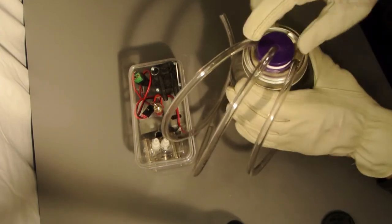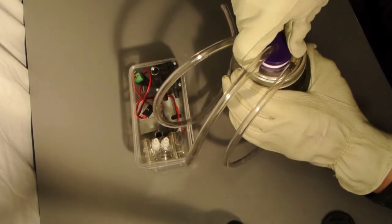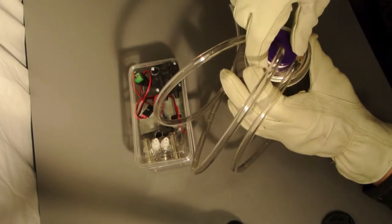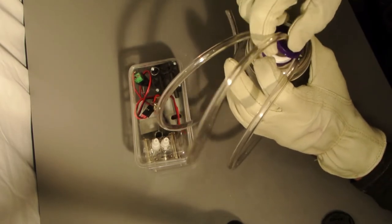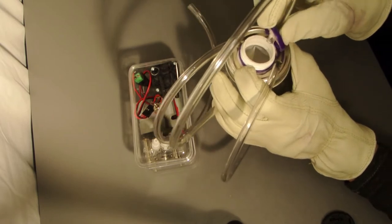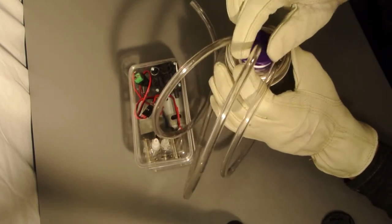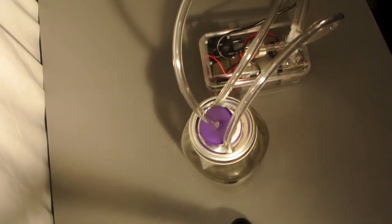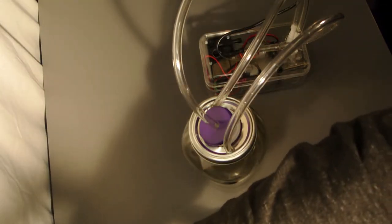Now we can hook up the mason jar with the pumps. Make sure the water inlet is going through the purple lid, and the other two are for the water outlet and the vacuum.